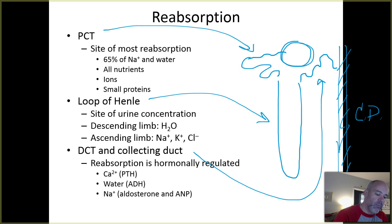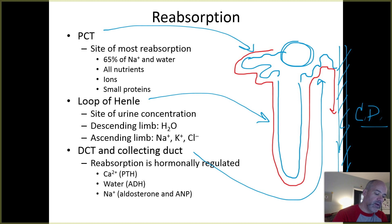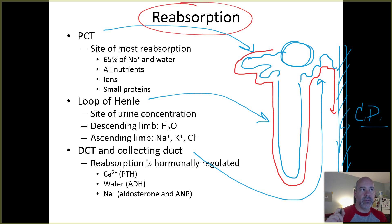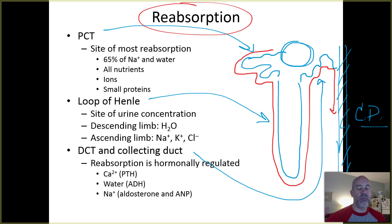Then the distal convoluted tubule connects into a collecting duct, abbreviated CD. Our developing urine flows through all these structures, and reabsorption is where you reclaim substances out of the proximal convoluted tubule, loop of Henle, distal convoluted tubule, or the collecting duct — before reaching the renal pelvis and ureters, which take the formed urine down to the bladder for storage.